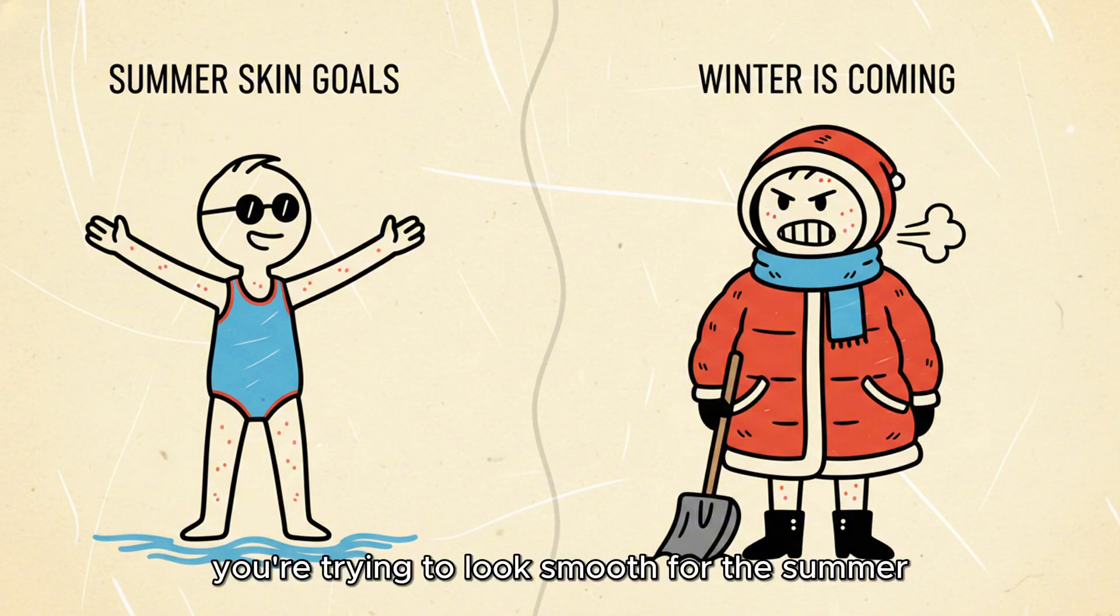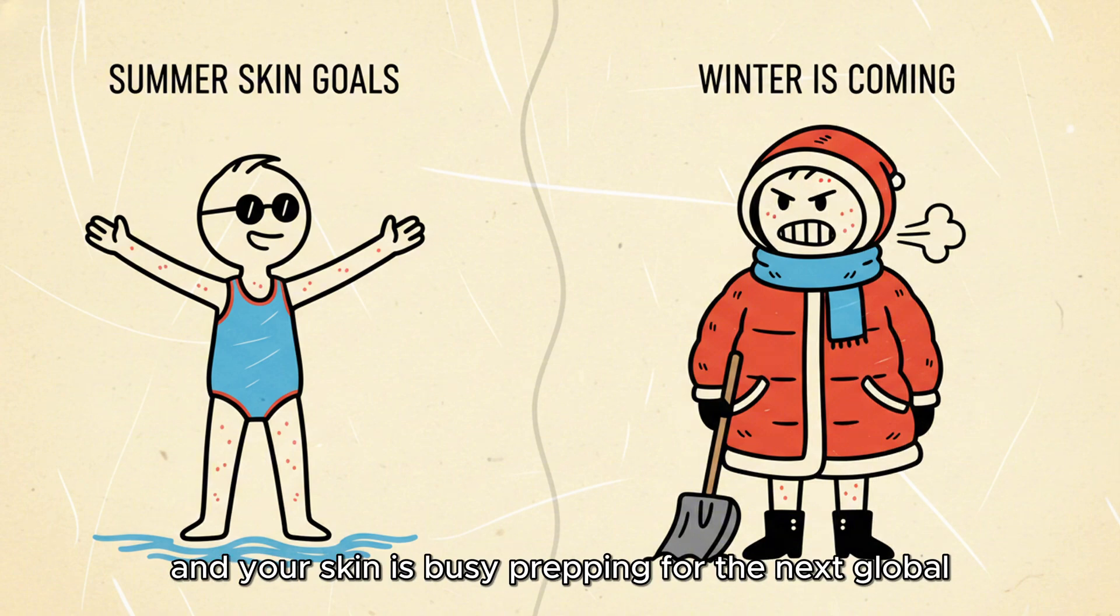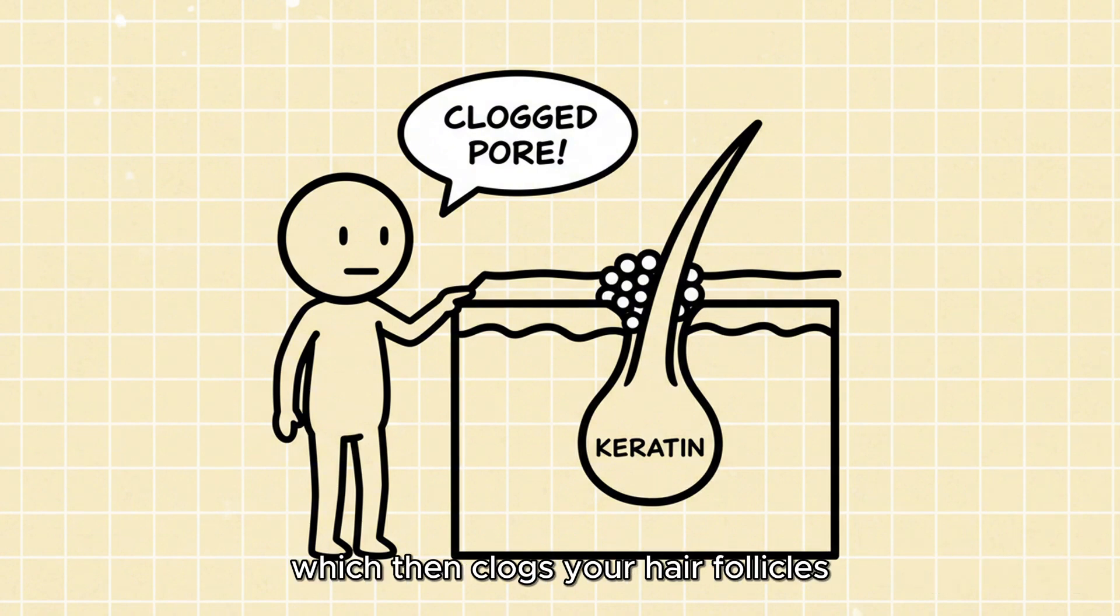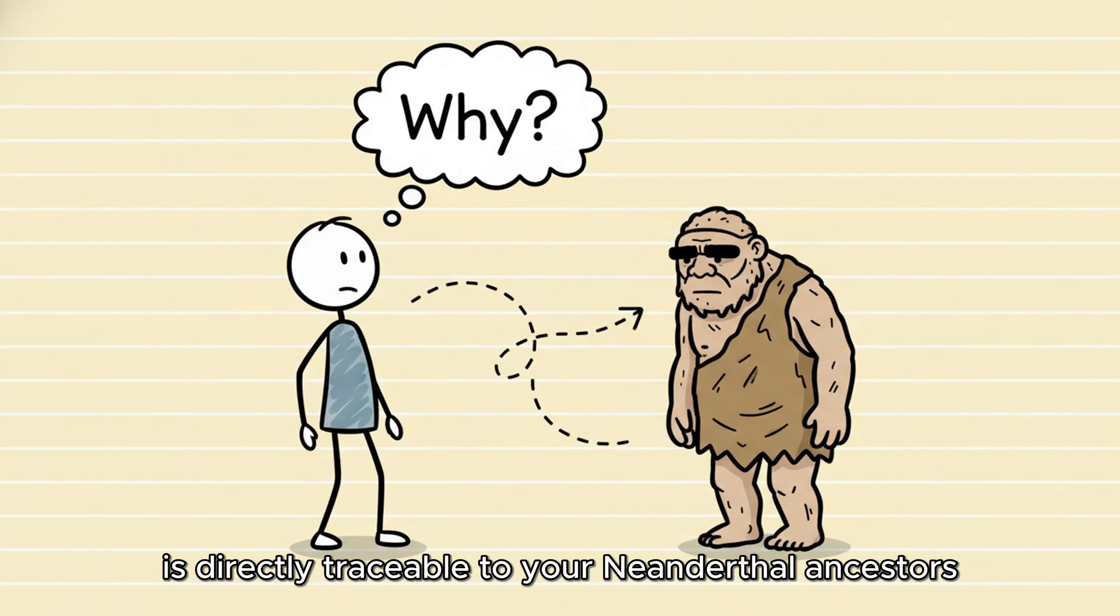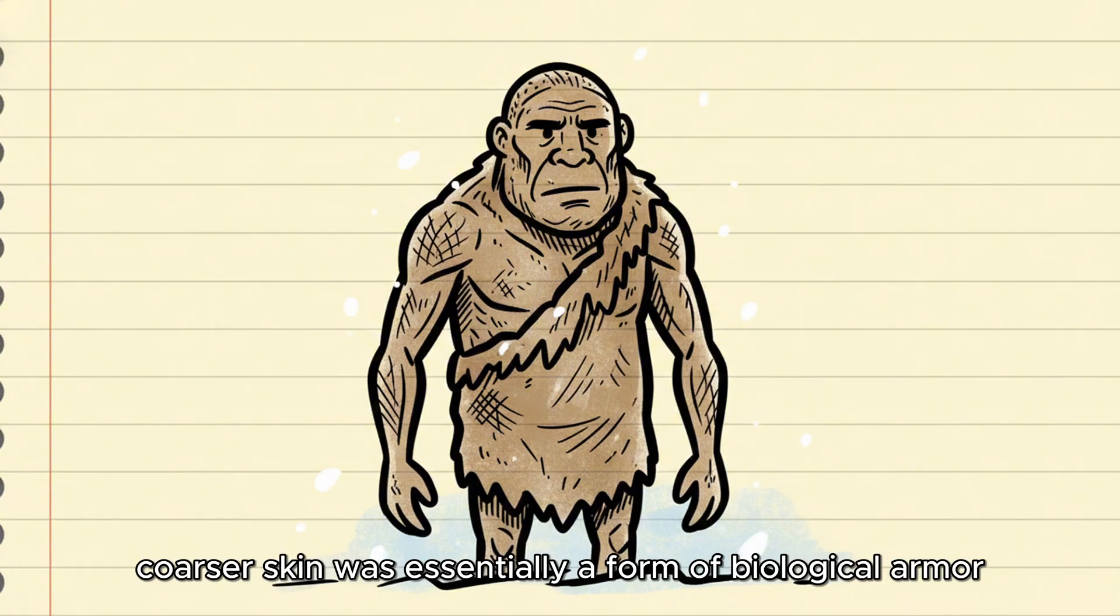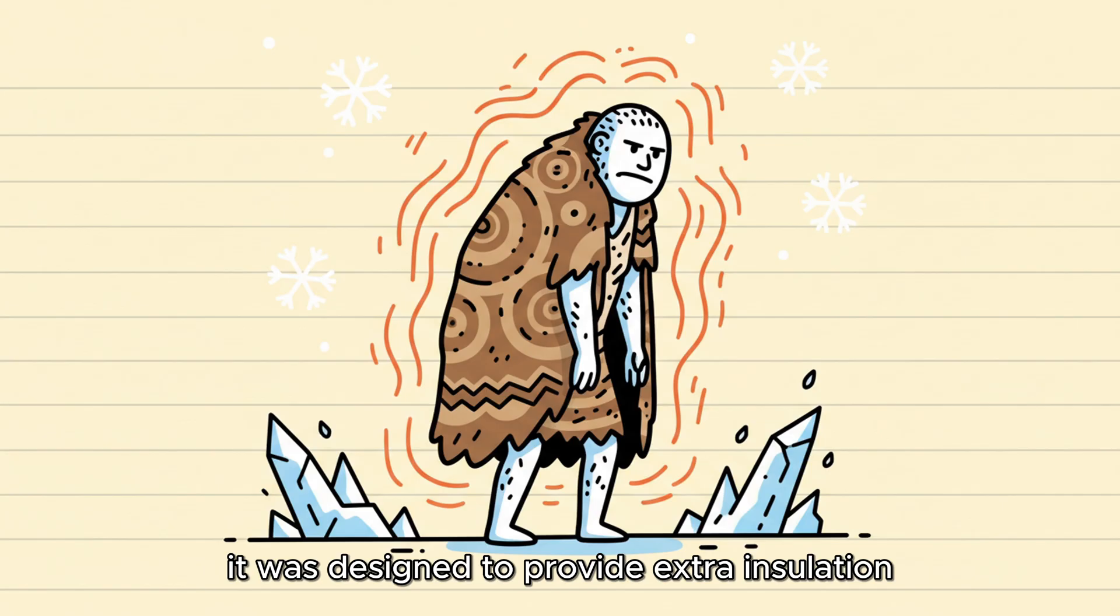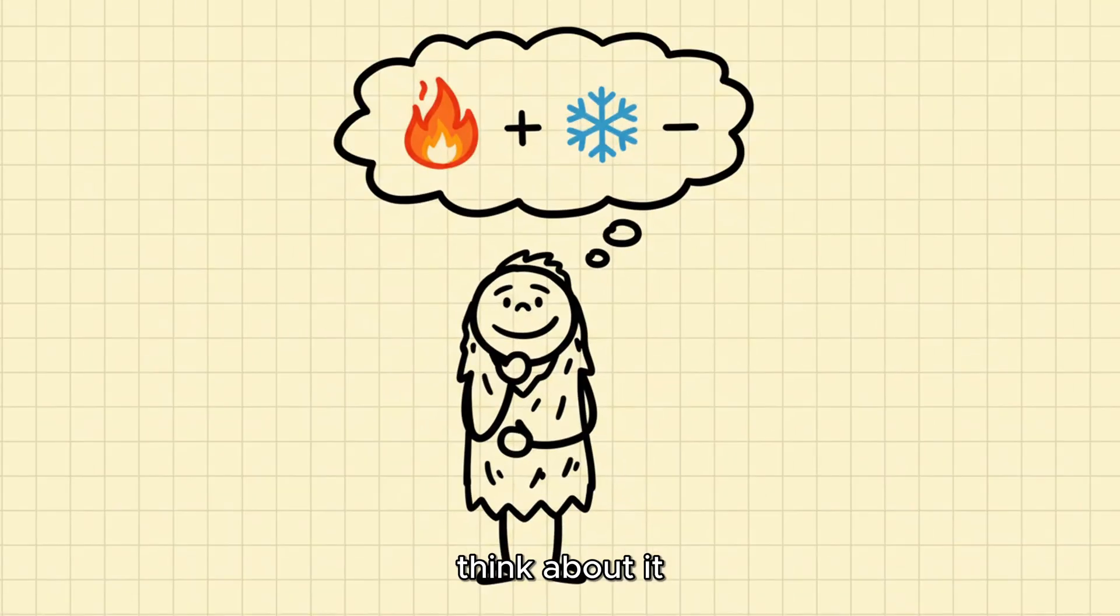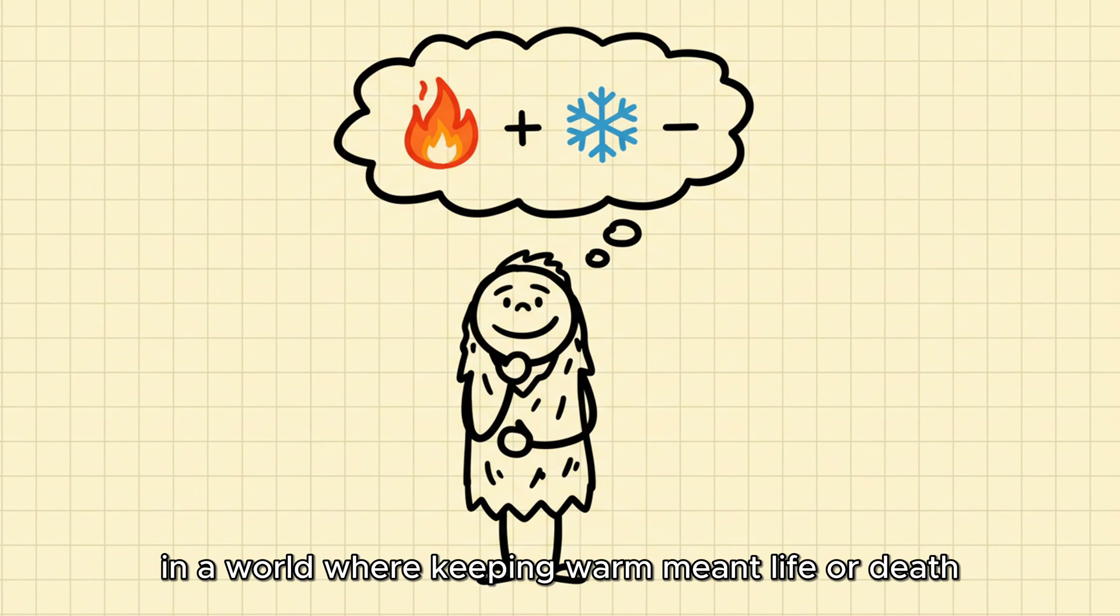You're trying to look smooth for the summer, and your skin is busy prepping for the next global deep freeze. The science is simple. Your body produces too much keratin, a protective protein, which then clogs your hair follicles. But why? This trait is directly traceable to your Neanderthal ancestors. They lived primarily in colder climates, and this thicker, coarser skin was essentially a form of biological armor. It was designed to provide extra insulation, slow heat loss, and offer better protection against the rough, freezing environment of the Ice Age.